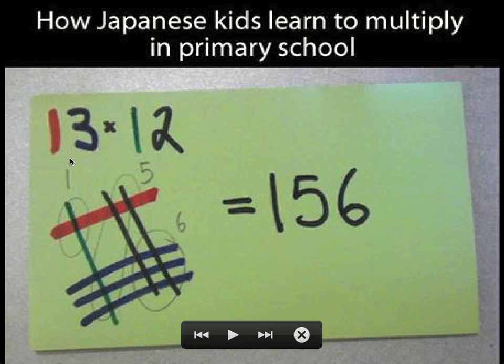In this example, we have two simple numbers, 13 times 12. And the 13 is broken into one red stroke and three blue strokes. The 12 is represented as one green stroke and two black strokes. And what the child does is look for the places in which the strokes cross, counting up the number of crossings.